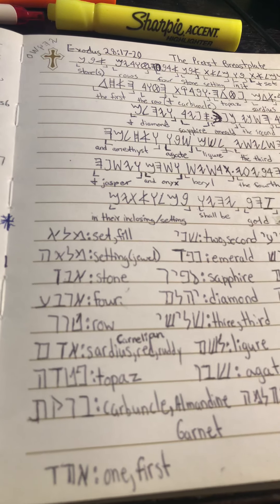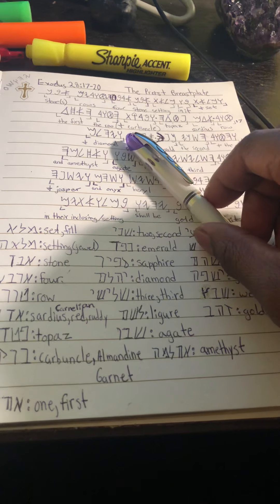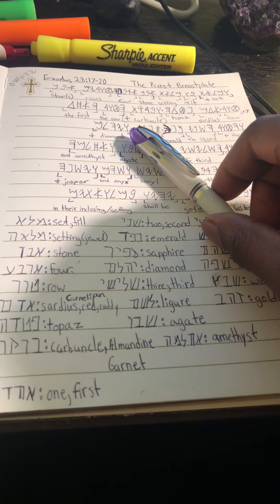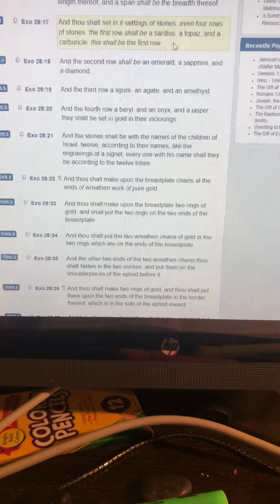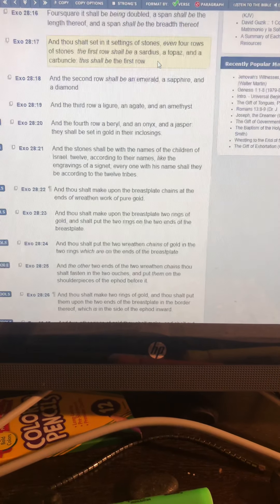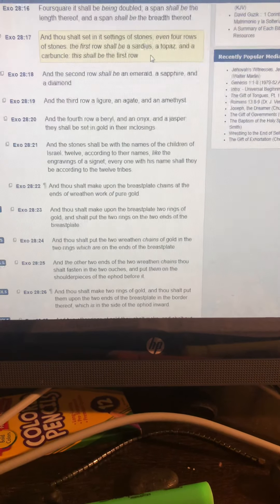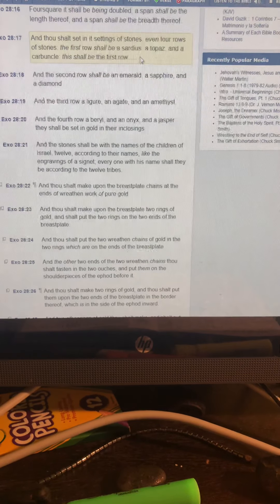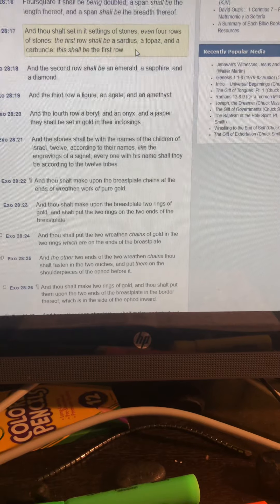Let's get it into English. We're going to do Exodus, the 28th chapter, the 17th through the 20th verse. We're going to get it in English and then we're going to touch up on it in the Hebrew. Exodus chapter 28, verse 17 says: 'And thou shalt set in it settings of stones, even four rows of stones. The first row shall be a sardius, a topaz, and a carbuncle. This shall be the first row.'